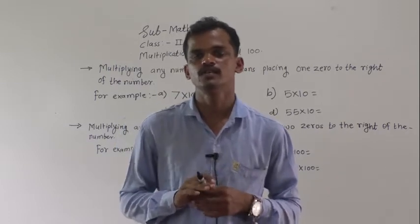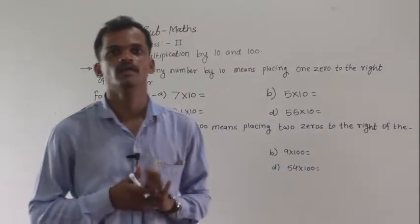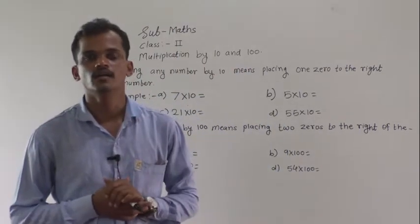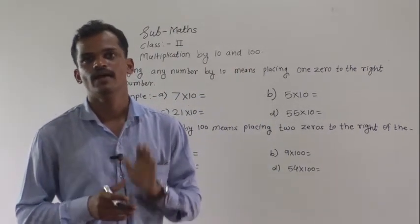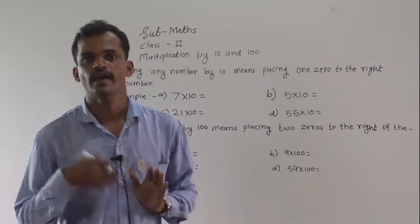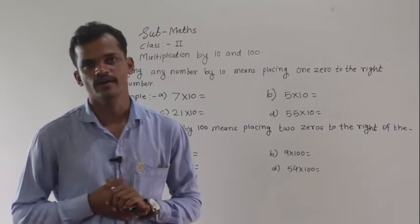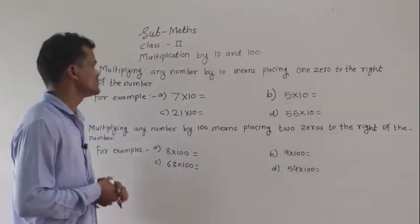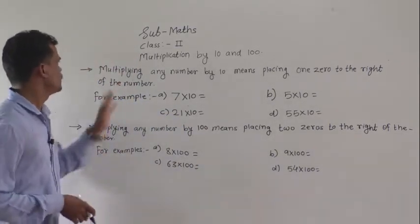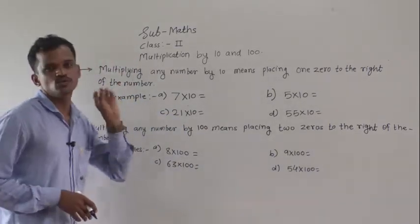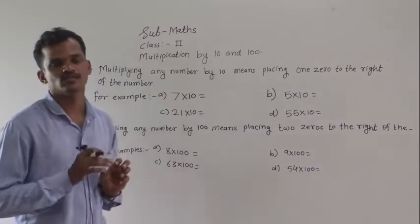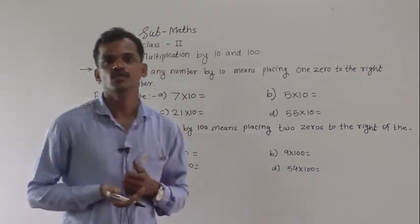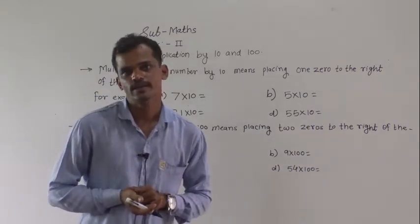Today we will see how to multiply a number by 10 and 100. It is very simple — we have to use the tricks, so it will be very easy.